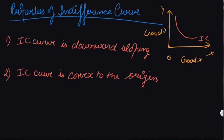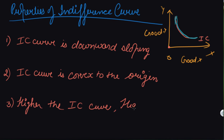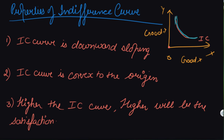The third property is: higher the IC curve, higher the satisfaction. We covered this in the indifference map. Why is the IC curve convex to the origin? It is due to the marginal rate of substitution, which we will study in the next video. But briefly, for every extra unit of good X, you have to sacrifice more of good Y.